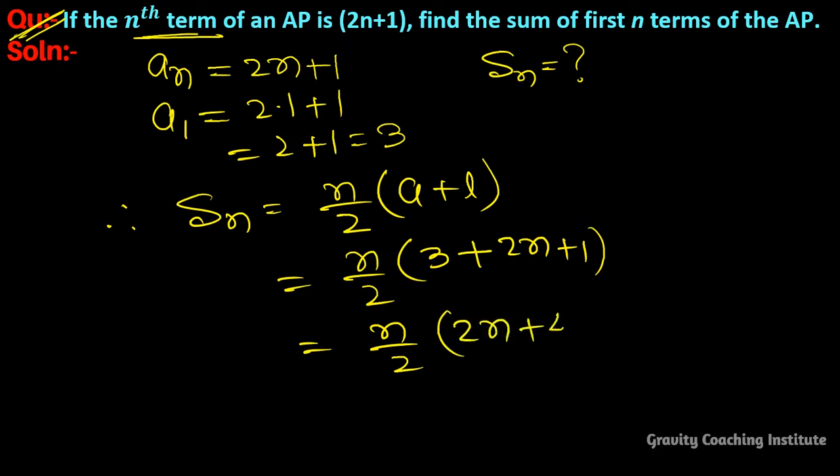This becomes 2n plus 4. So it equals n upon 2. Take 2 common: n upon 2 into 2(n plus 2). The 2s cancel, so we get n(n plus 2). That's the answer.